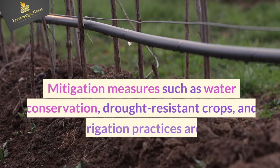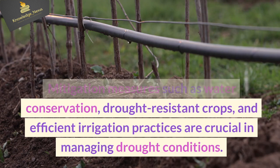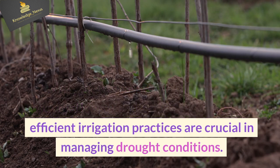Mitigation measures such as water conservation, drought-resistant crops, and efficient irrigation practices are crucial in managing drought conditions.